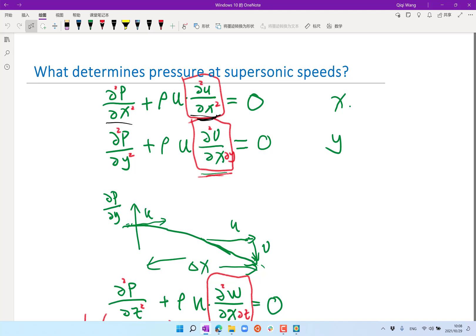Because if you use the chain rule, the derivative of ρu du/dx is equal to ρu d²u/dx² plus another term which is the derivative of ρu with respect to x times the original derivative.